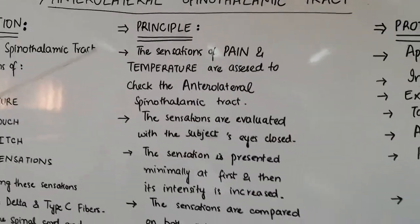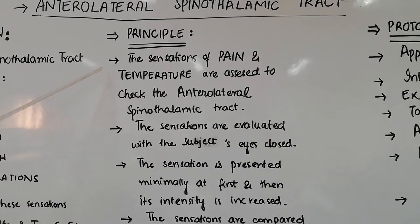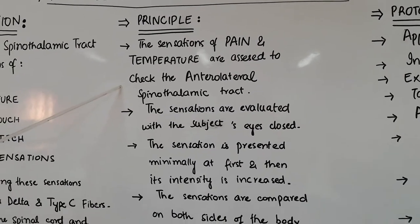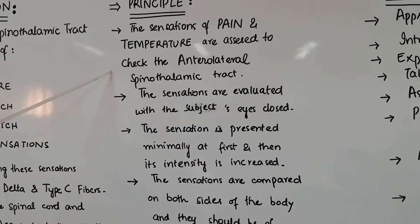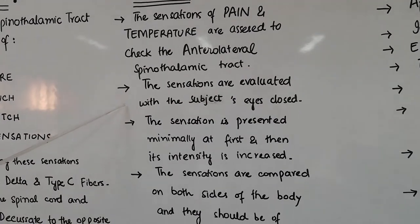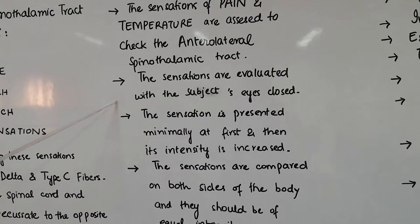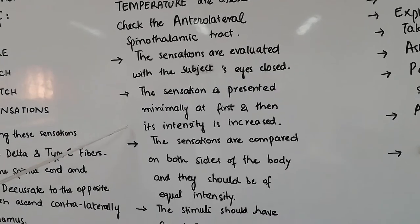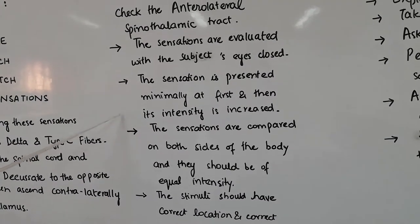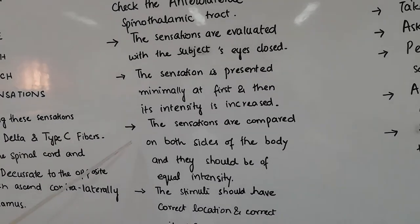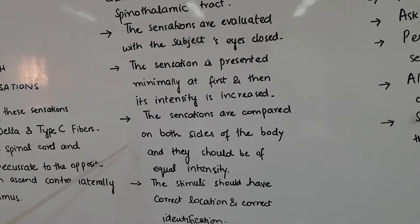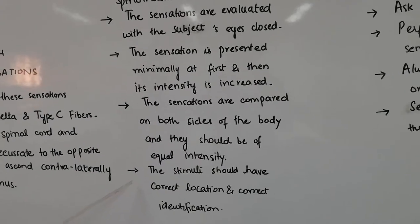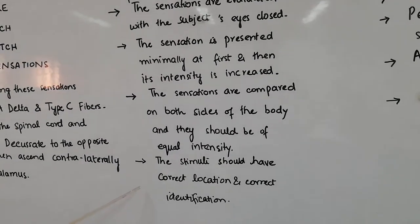The principle of this practical is that the sensations of pain and temperature are assessed on a subject to check the anterolateral spinothalamic tract. The sensations are evaluated with the subject's eyes closed, and the sensation is presented minimally at first and then its intensity is increased. The sensations are compared on both sides of the body and should be of equal intensity. The stimuli should have correct location and correct identification by the subject.